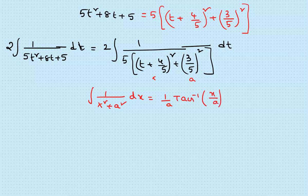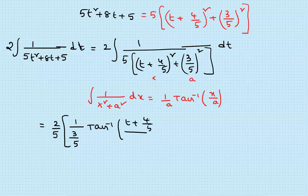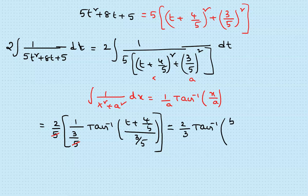Applying the formula: (2/5)·(1/(3/5))·tan⁻¹[(t+4/5)/(3/5)]. Simplifying: the 5s cancel, giving (2/3)·tan⁻¹[(5t+4)/3]. This is the final answer after back-substituting t = tan(x/2): (2/3)·tan⁻¹[(5·tan(x/2)+4)/3] + C.